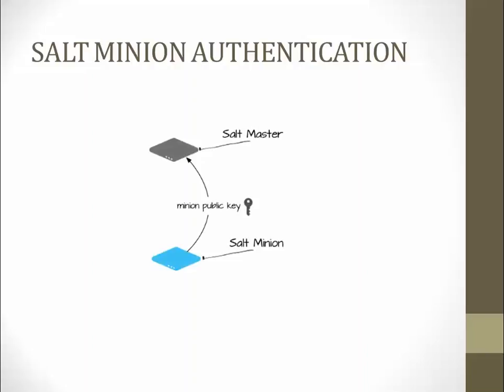Here's an architectural diagram showing how salt master and minion authenticate. After setup, when minions are configured and started they check for a hostname called 'salt' — the default hostname of the master. The minion sends its public key to the salt master, and the salt master's role is to accept the salt minion keys, establishing authentication between master and minion.